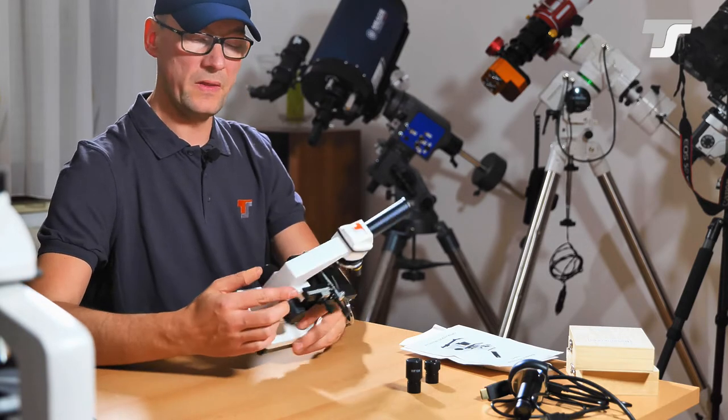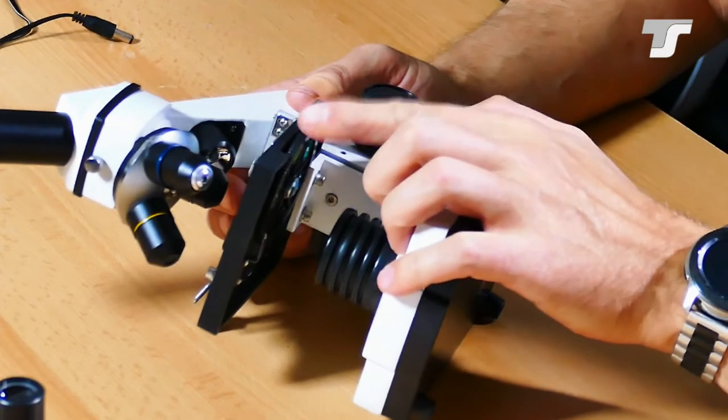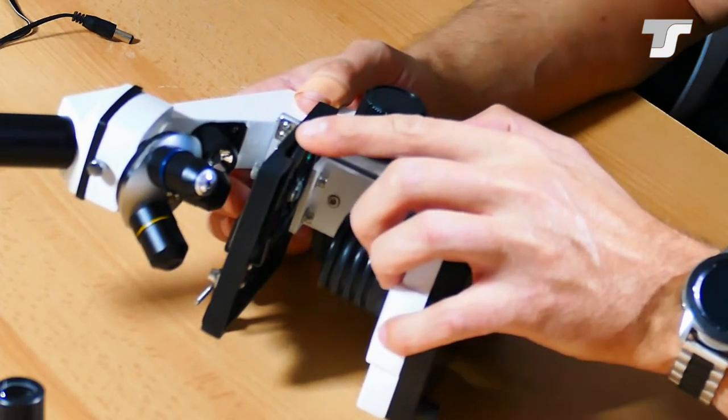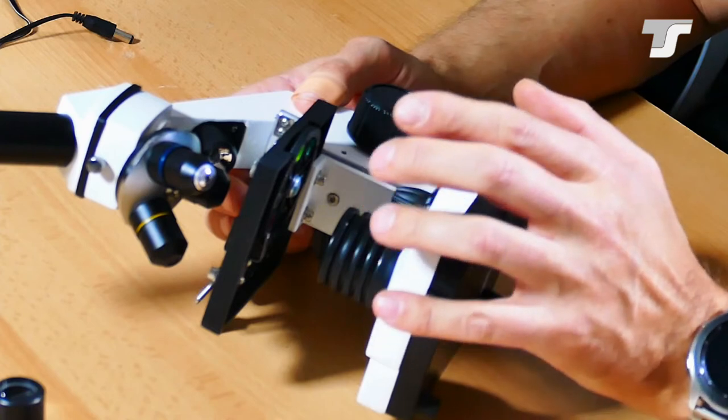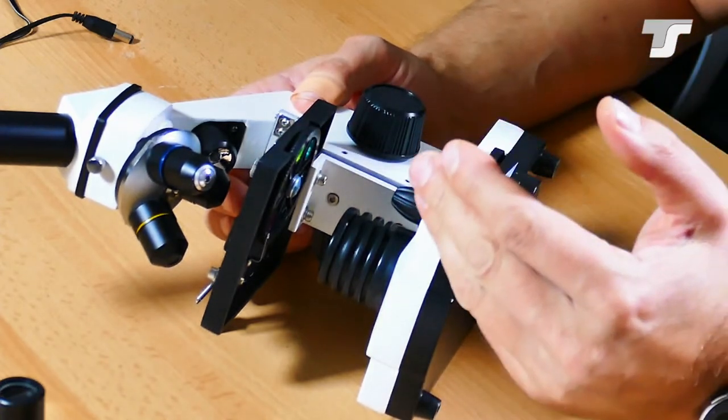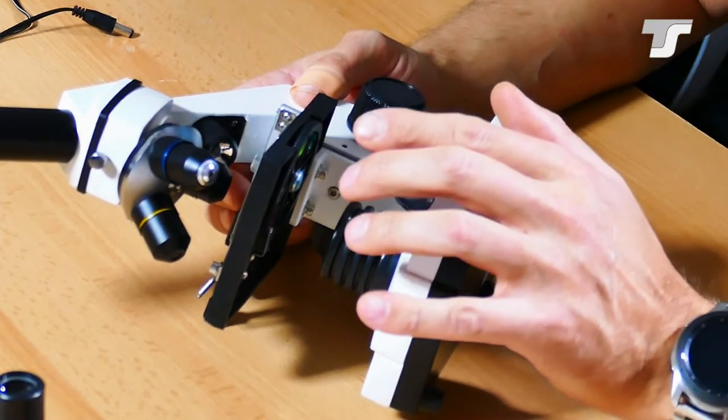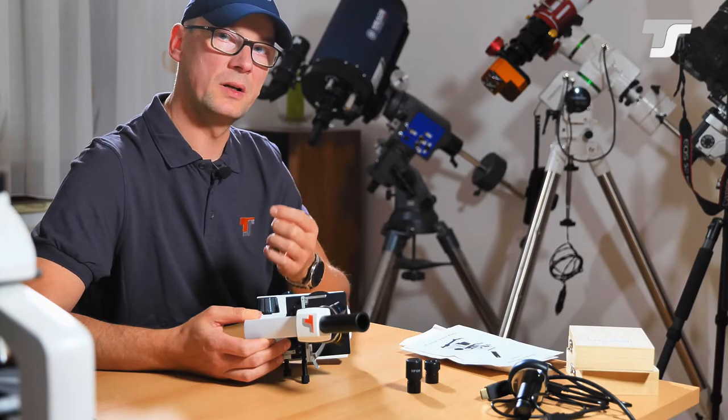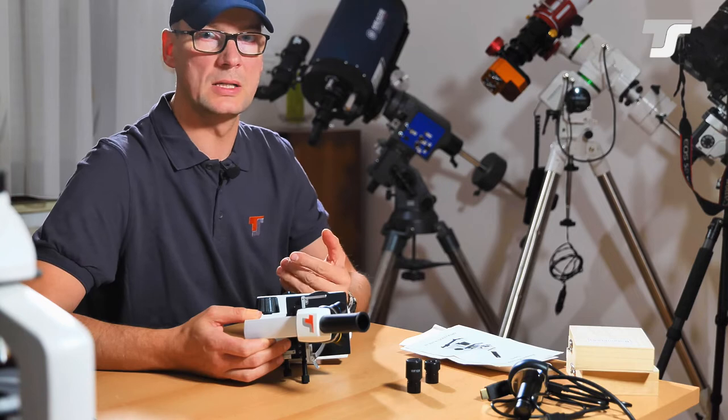Last but not least, there's one feature left. And this is below the table. Below the table, there is a filter wheel integrated. A six position filter wheel with one empty position. And then there are some color filters integrated. So you can match your subject to the perfect color to get the most contrast out of your subject.